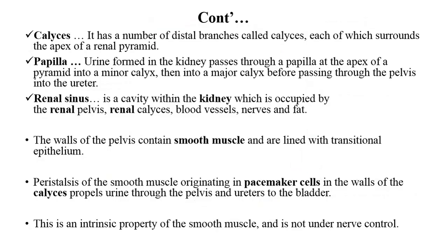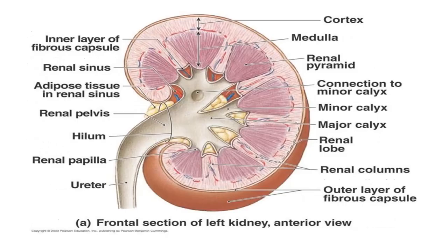Calyces are the distal branches, each of which surrounds the apex of the renal pyramids. In the kidney there are two types of calyces: the minor calyces and the major calyces. The renal pelvis is further divided into the major calyces, and the major calyces are further divided into the smaller minor calyces where the collection of urine takes place.